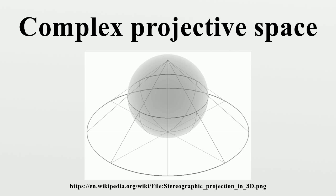The horizon is then the space of directions, but such that two directions are regarded as the same if they differ only by a phase. The complex projective space is the space of directions through the origin of C^(n+1), where two directions are regarded as the same if they differ by a phase. Complex projective space is a complex manifold that may be described by n+1 complex coordinates, where the tuples differing by an overall rescaling are identified. That is, these are homogeneous coordinates in the traditional sense of projective geometry.